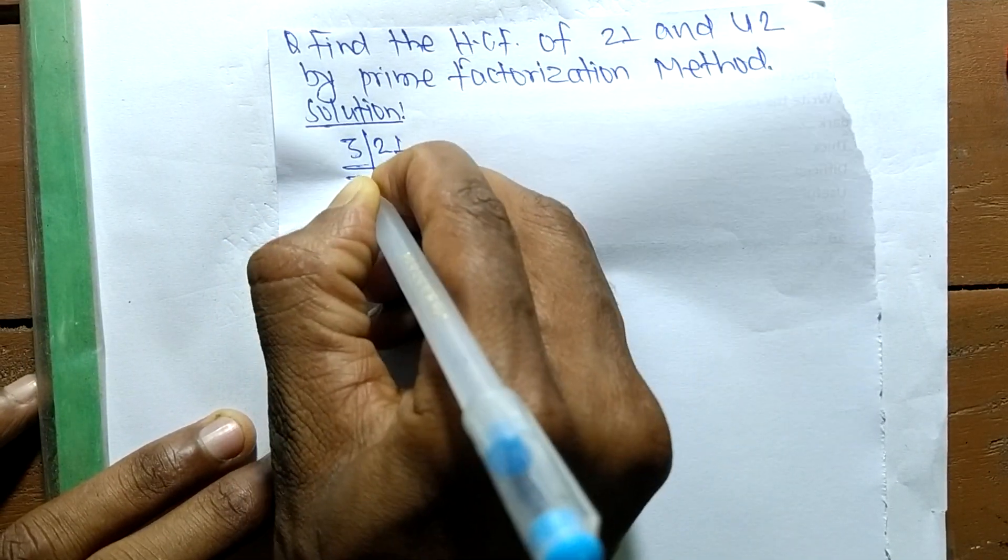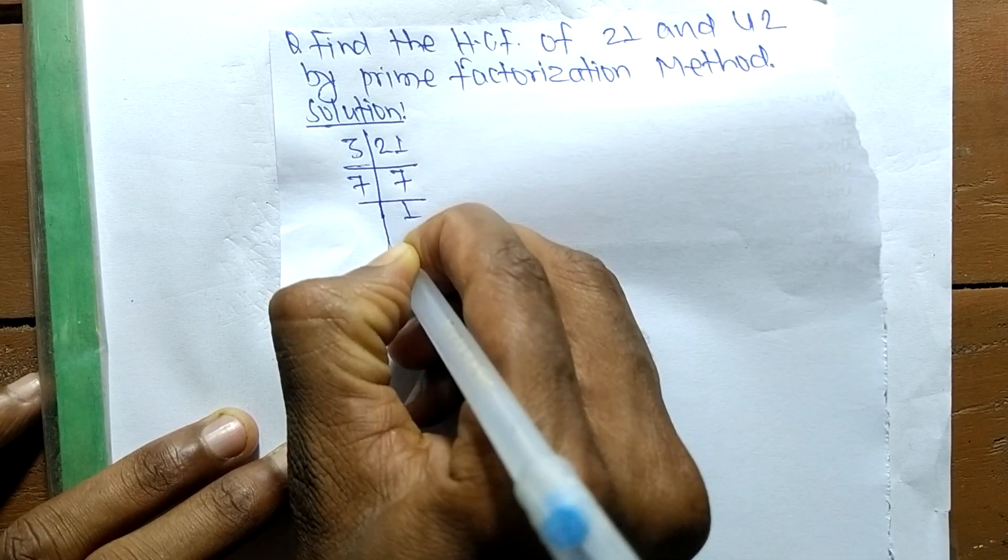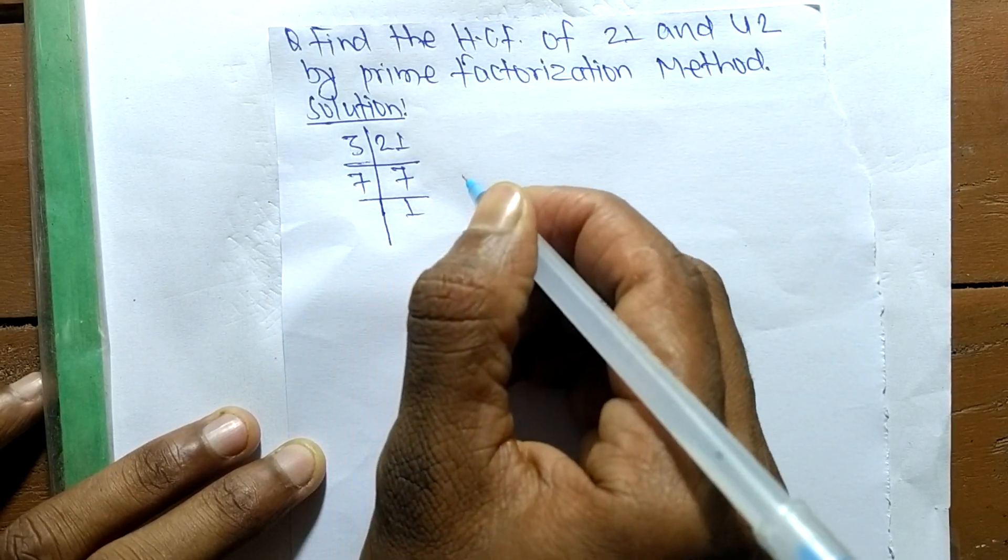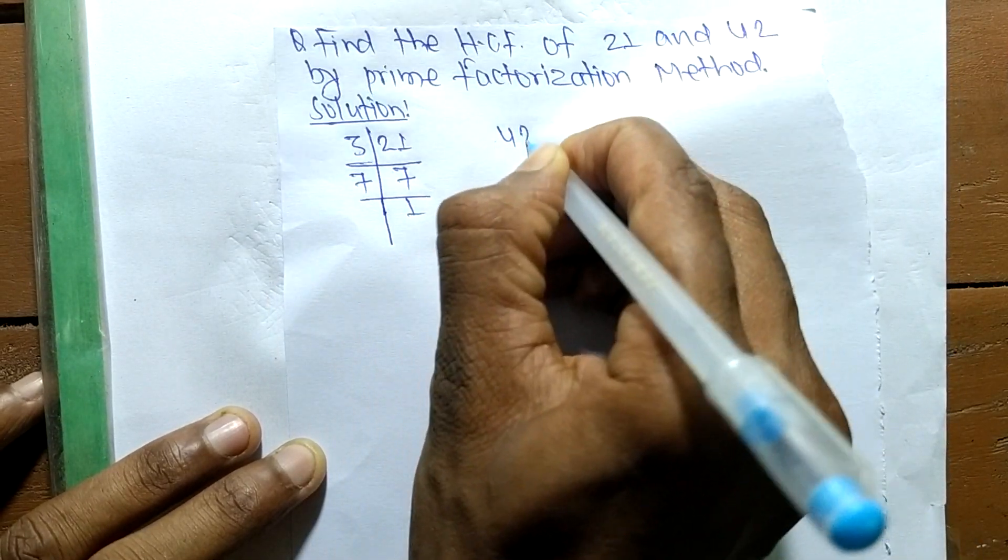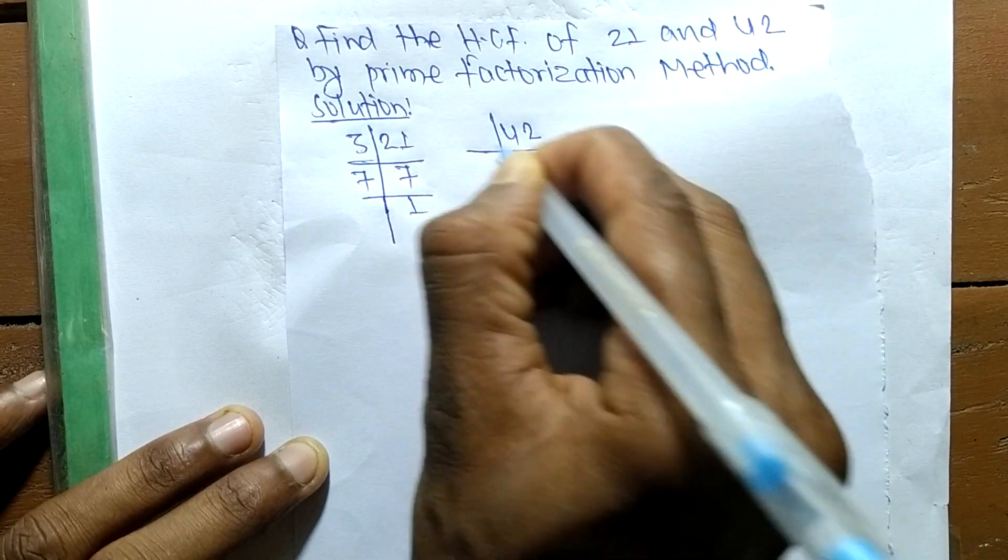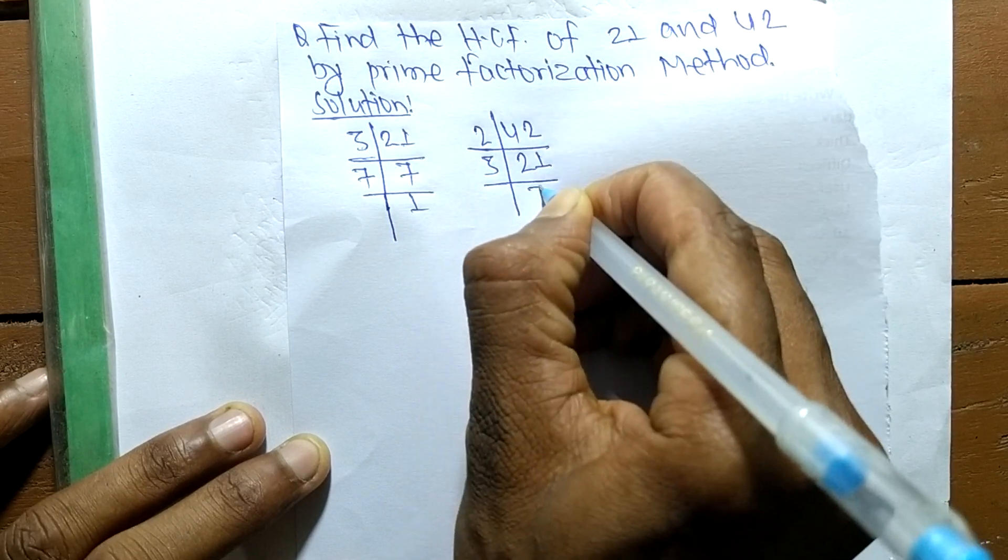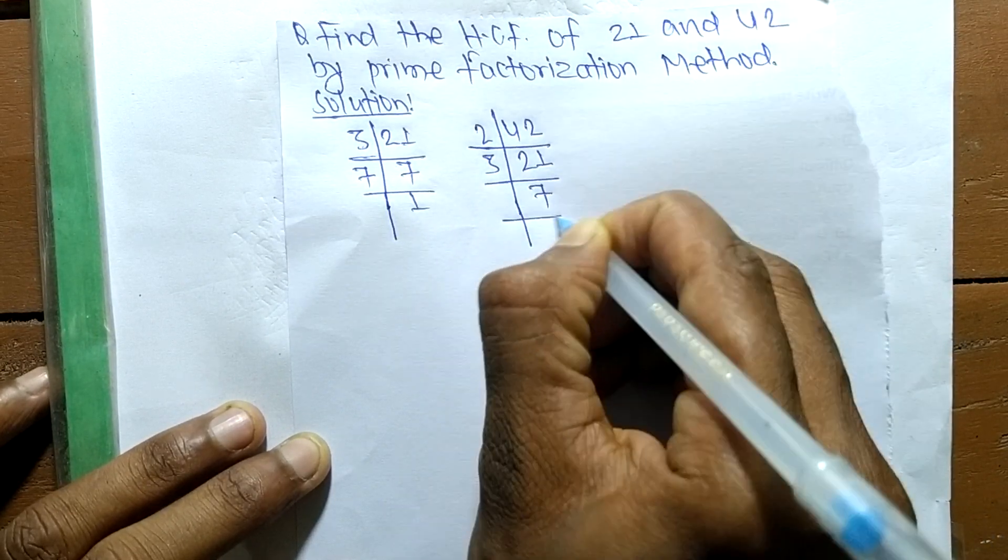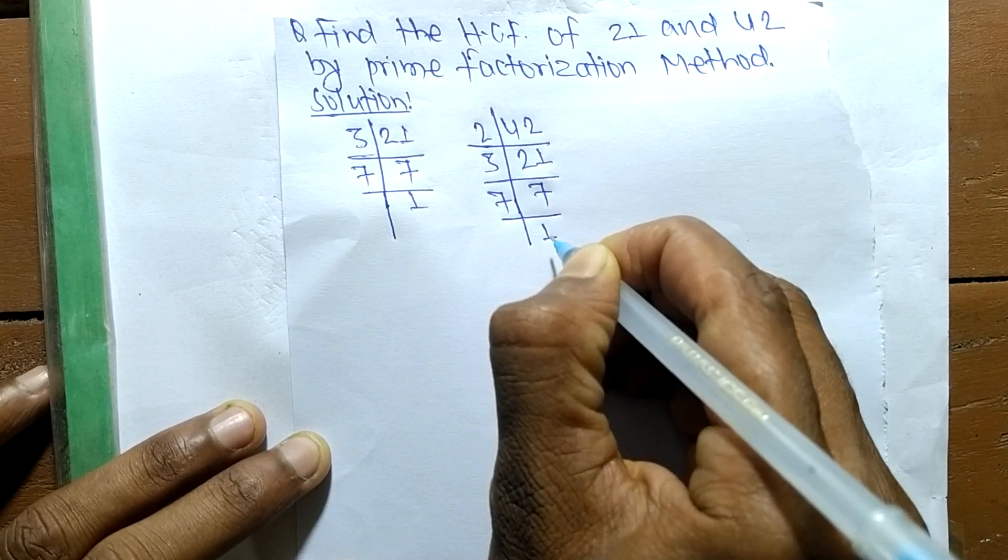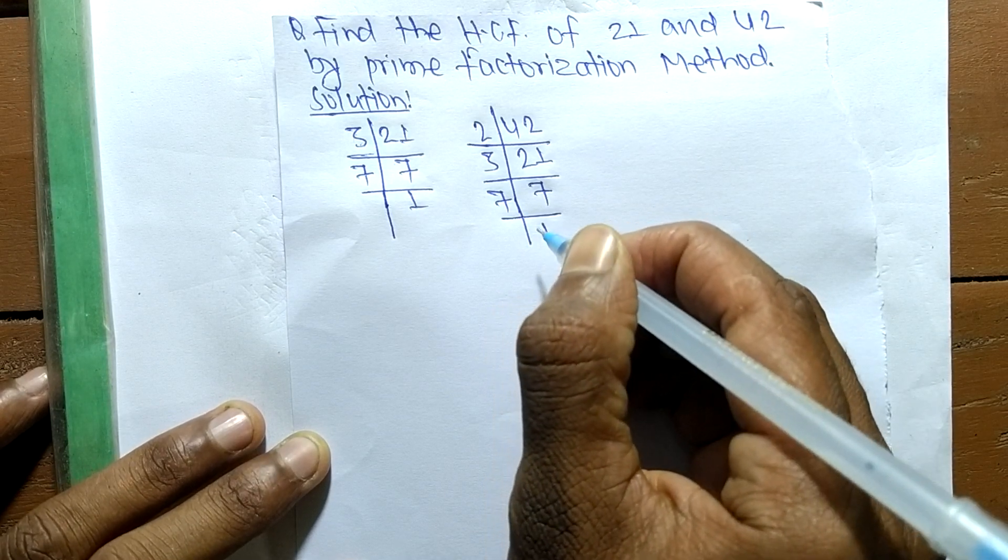which means 21, and 7 times 1 means it is 7. The prime factors of 42 are: 2 times 21 means 42, 3 times 7 means 21, and 7 times 1 means it is 7.